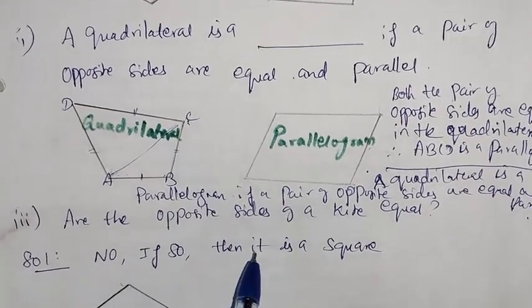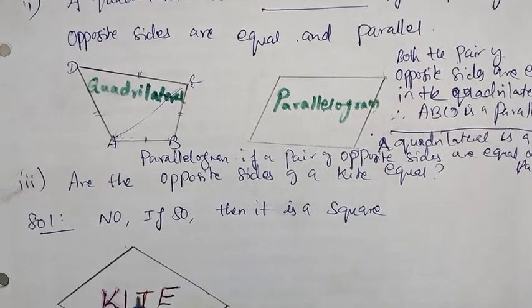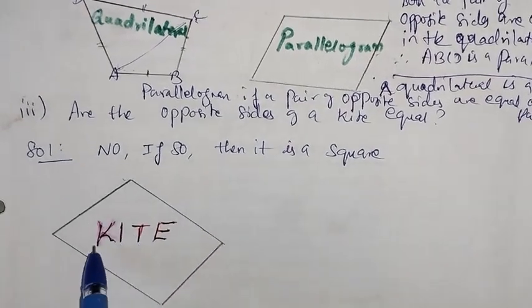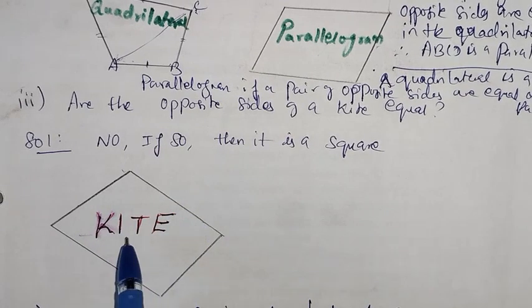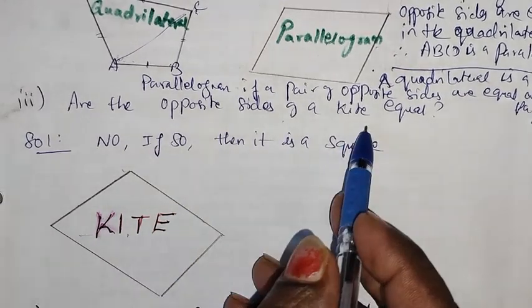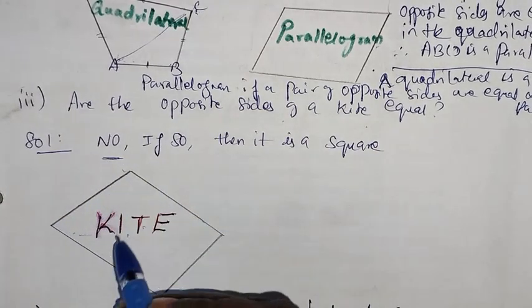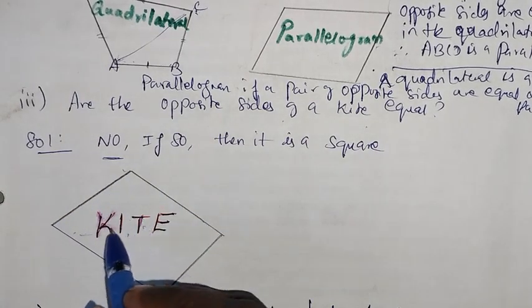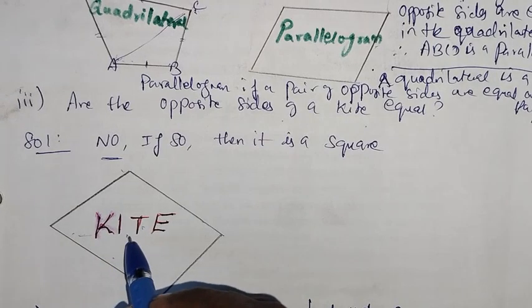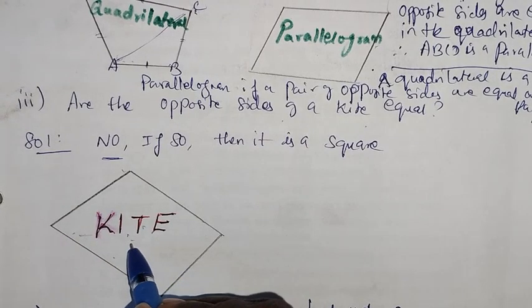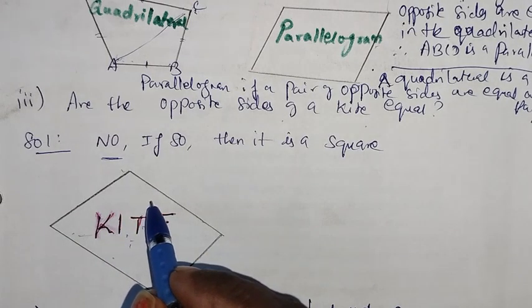Next, third question: are all the opposite sides of a kite equal? Opposite sides — a kite has a specific structure. Opposite sides of a kite are not equal.